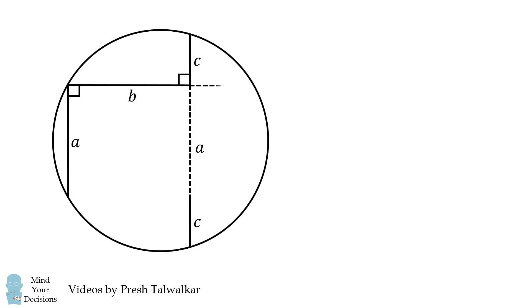Next, let's extend this line segment to be a chord of the circle. We don't know this length, so we'll label it as the variable D.